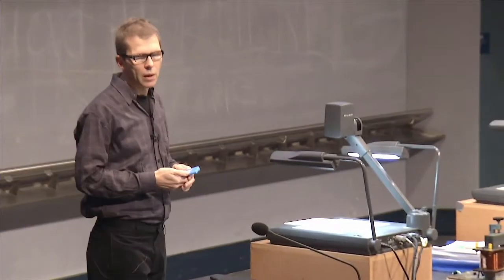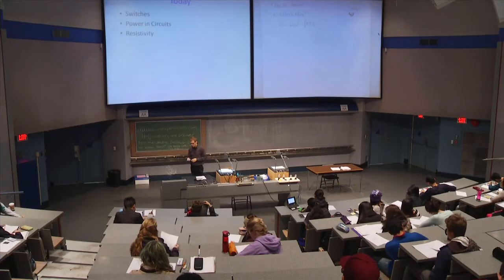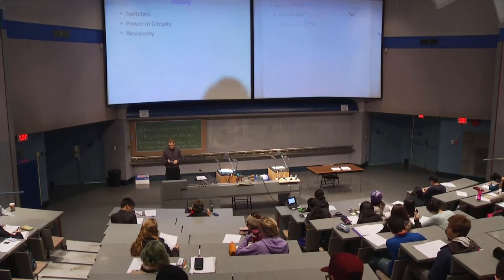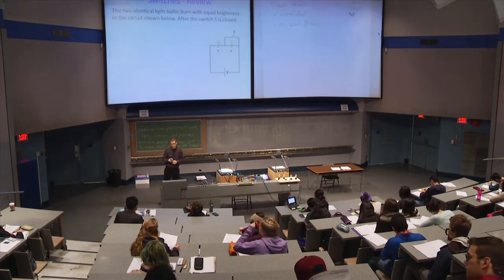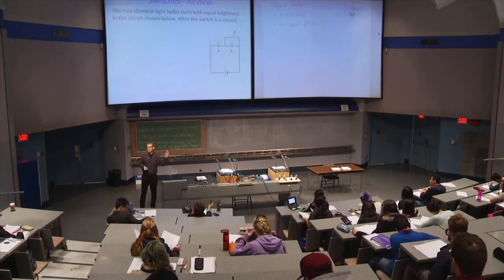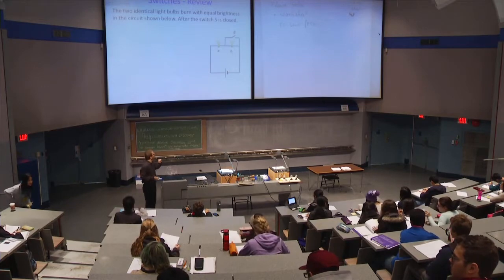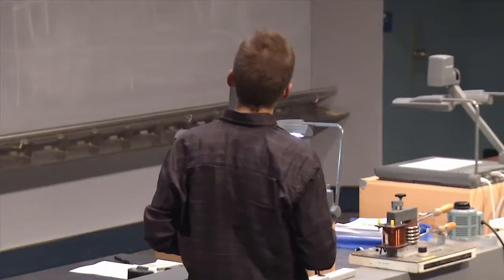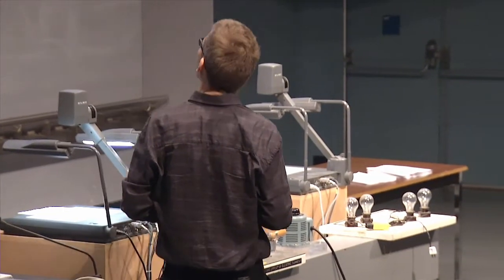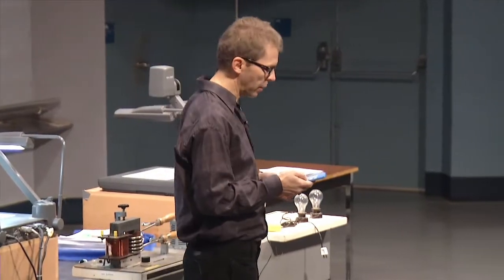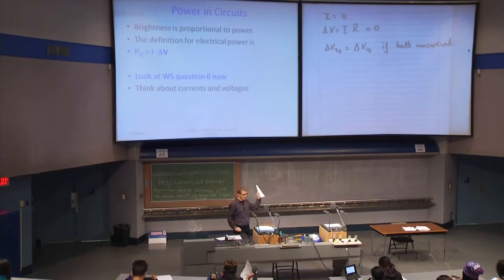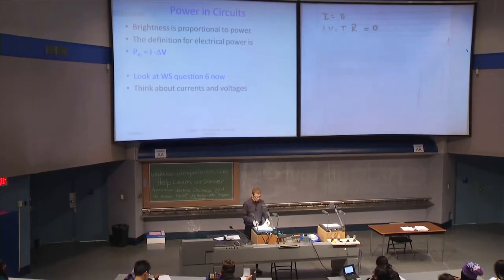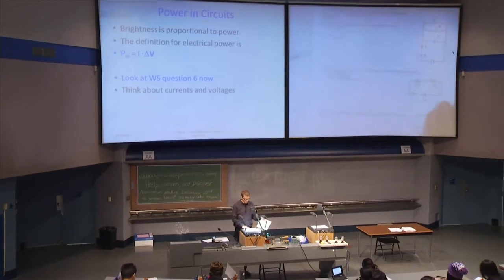The class starts with a relatively brief introduction. The students are reminded of what has been discussed so far and some context for the class is provided — for example, the two identical bulbs example with a switch across one of the light bulbs. The introduction ends with a motivation for the first worksheet task, and then students are directed to start working on the first worksheet problem.